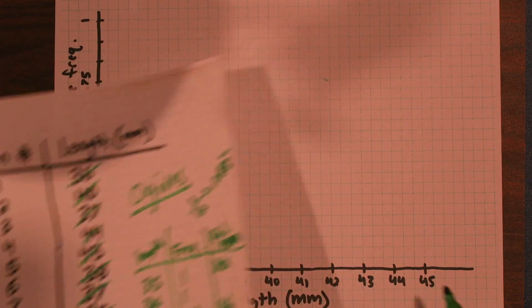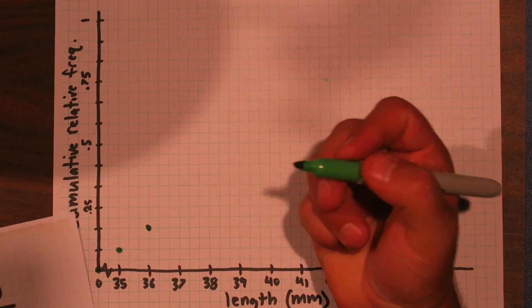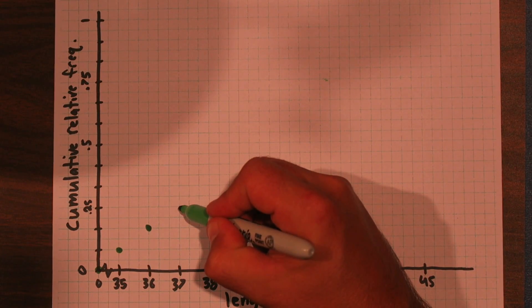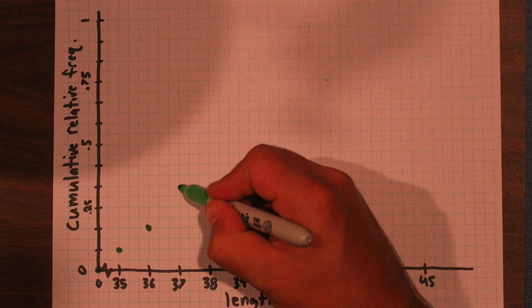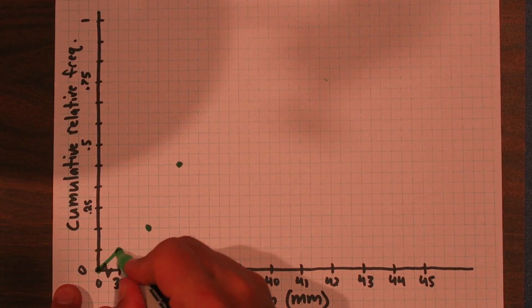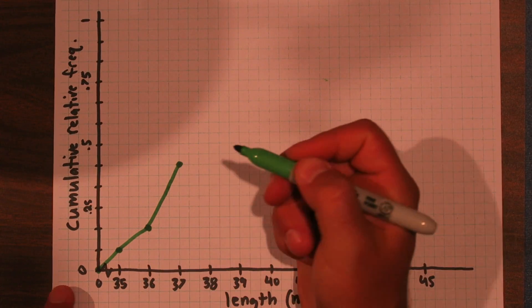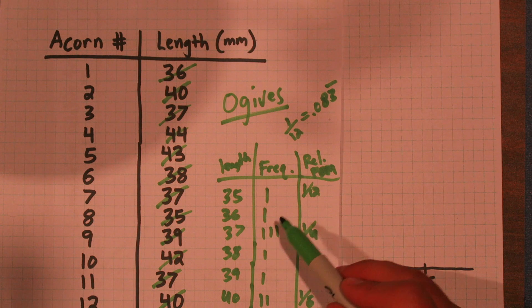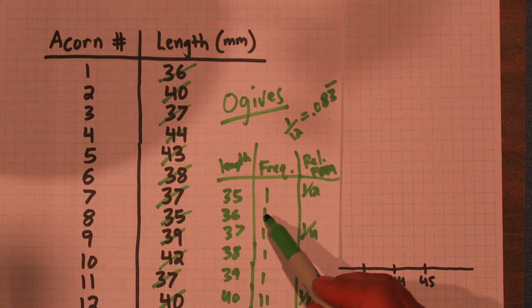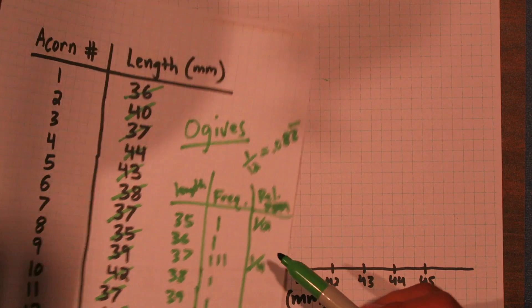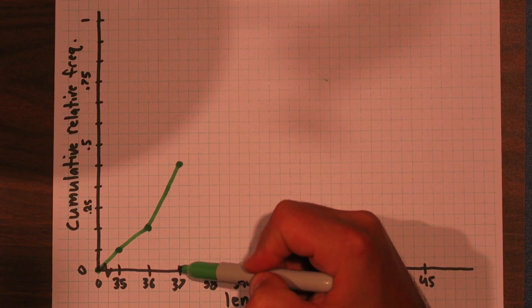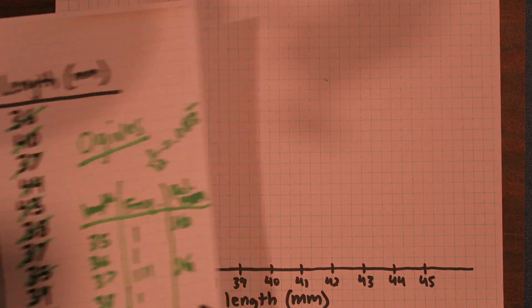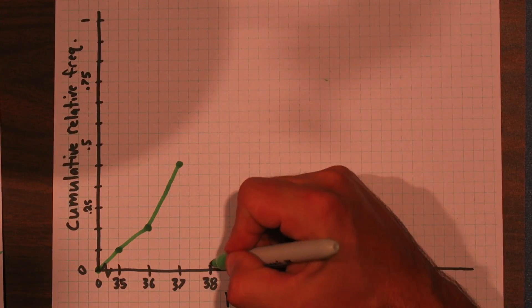At 36, we have 1 acorn. So I'm going to go up another 1/12th. At 37, we have 3 acorns. So I'm going to go up 1, 2, 3. Here's what it looks like so far. Basically what I'm doing is I'm adding each of these tick marks. By the time I get to 37, I should be at 1, 2, 3, 4, 5. I should be 5 units up, which I am. Let me put the 38 in there. At 38, let's go up one more.